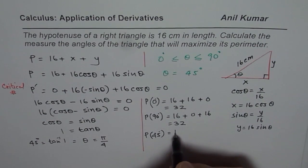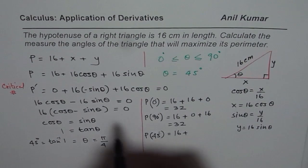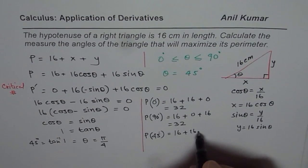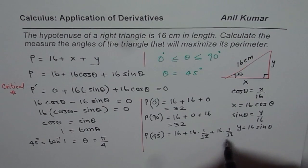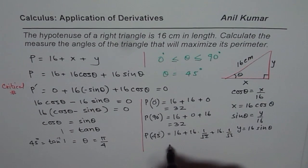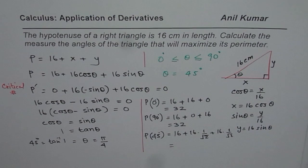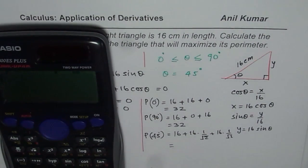45 degrees will be 16 plus 16 times 1 over square root 2, that is cos of 45 plus 16 times 1 over square root 2, which is sin of 45 degrees. So that means, let us calculate and find the answer.